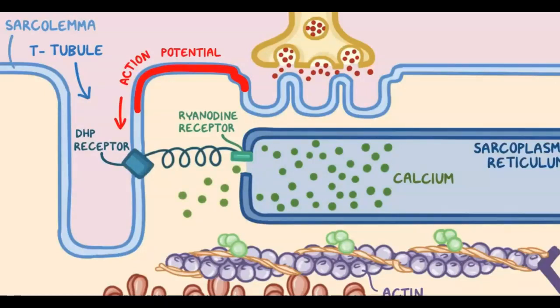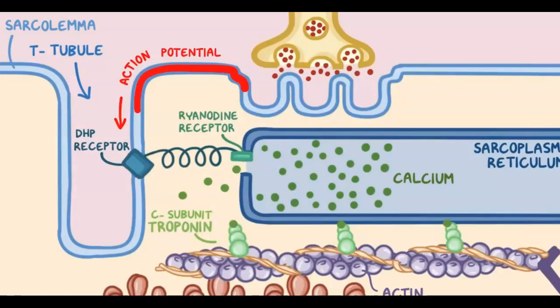These calcium ions float over to the thin filaments and bind to the C subunits of the troponin regulatory proteins, which makes them change their shape. When troponin changes shape, it moves tropomyosin out of the way, and that allows F-actin to be bound by the myosin heads.